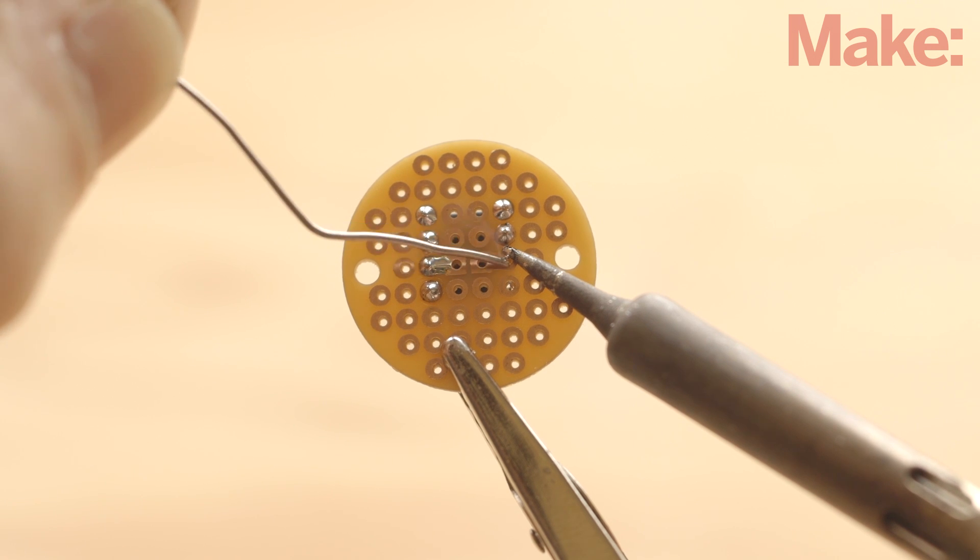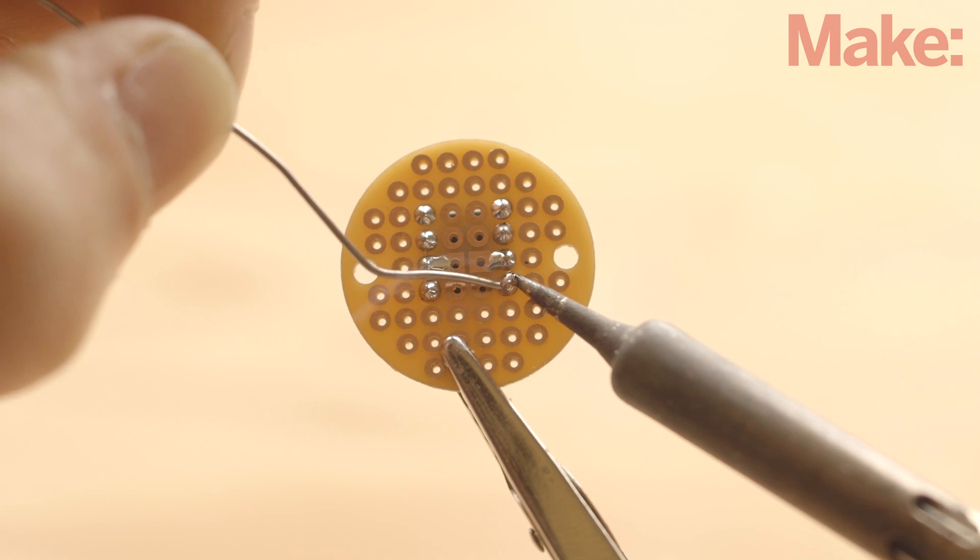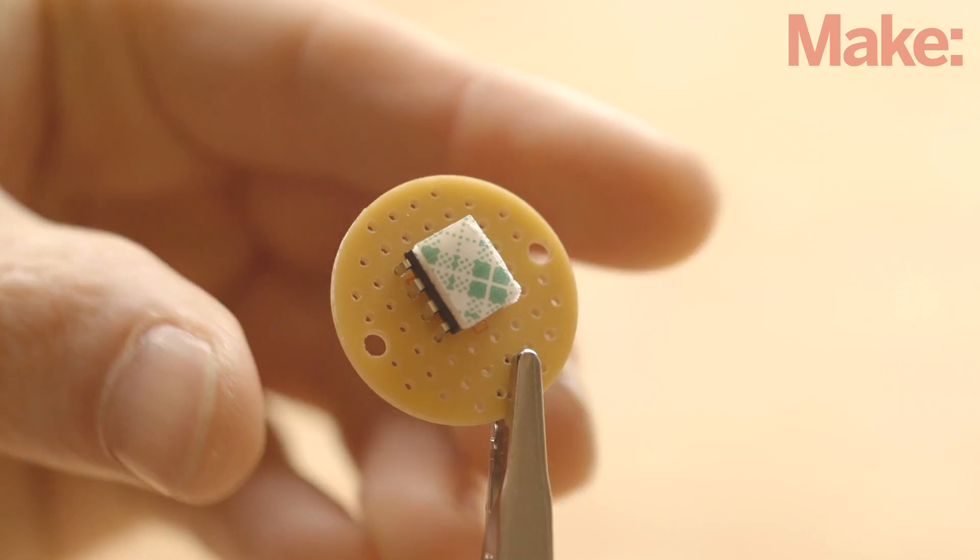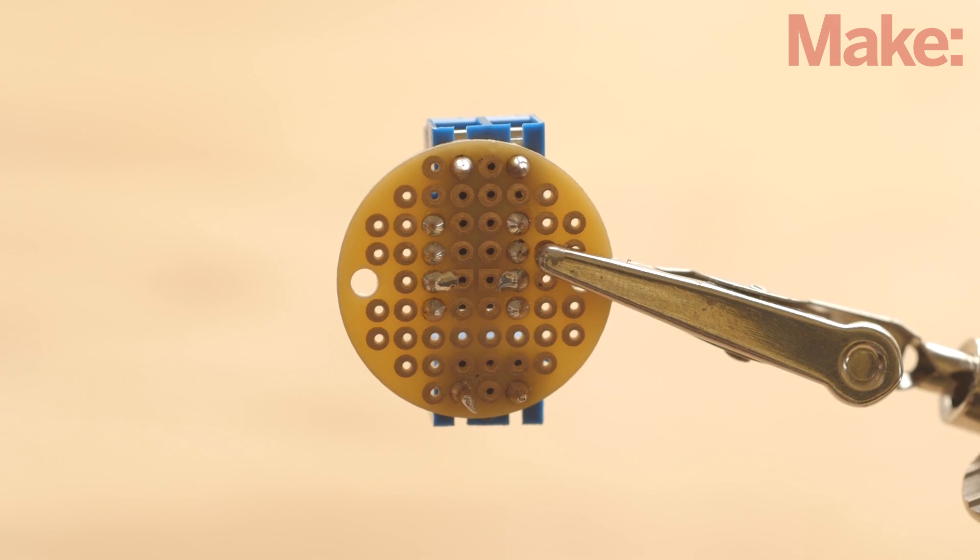Now we'll start wiring up the circuit board. Start by soldering all eight legs of the 555 timer into the PCB and attaching a piece of foam tape to the back. Now we can solder in the PCB board terminals, one above and one below the 555.